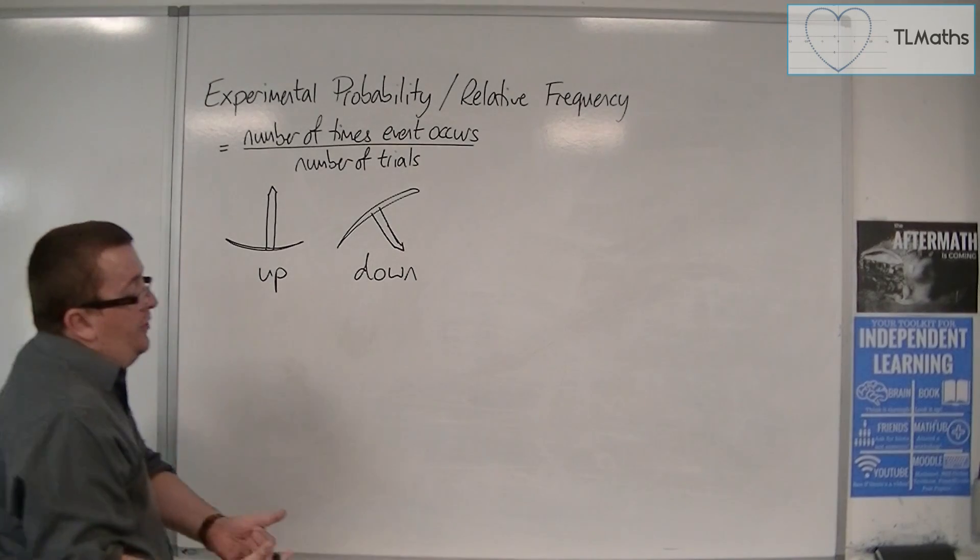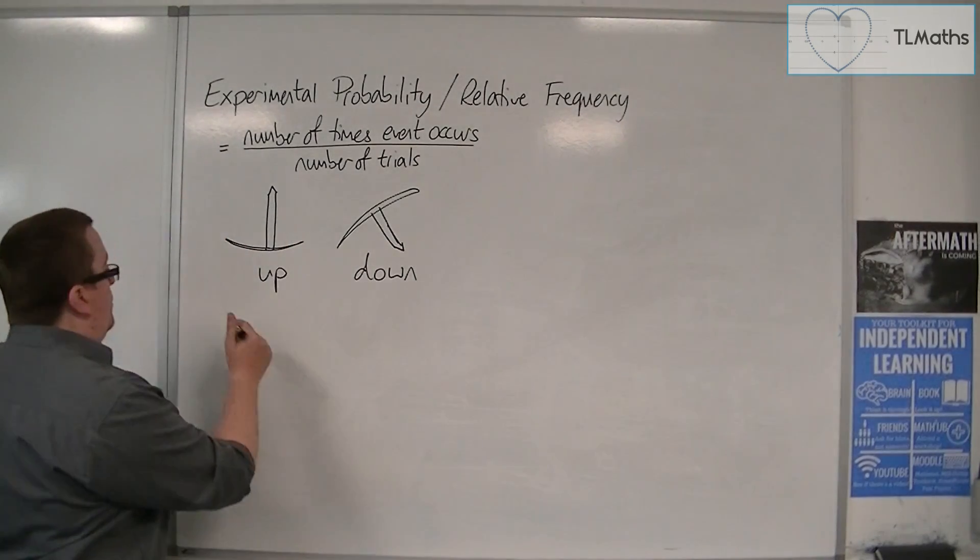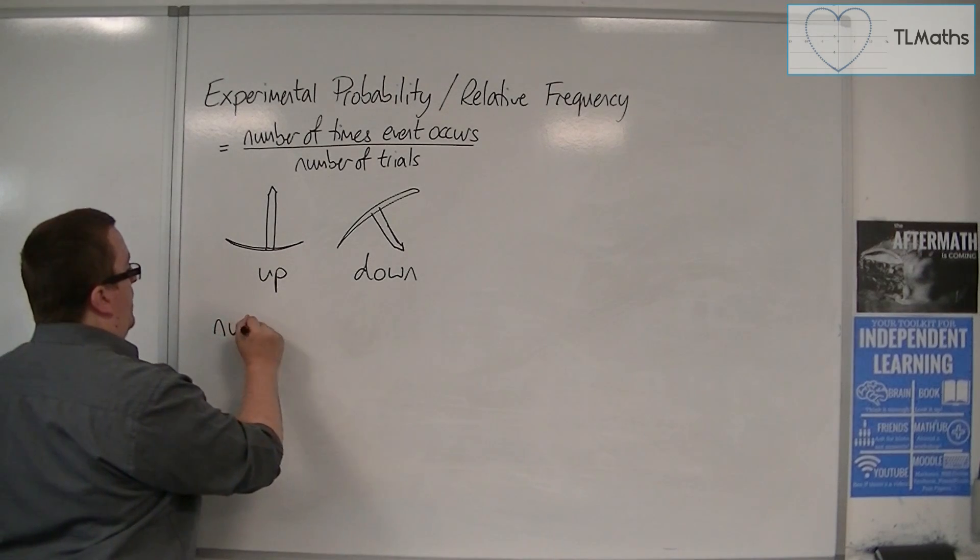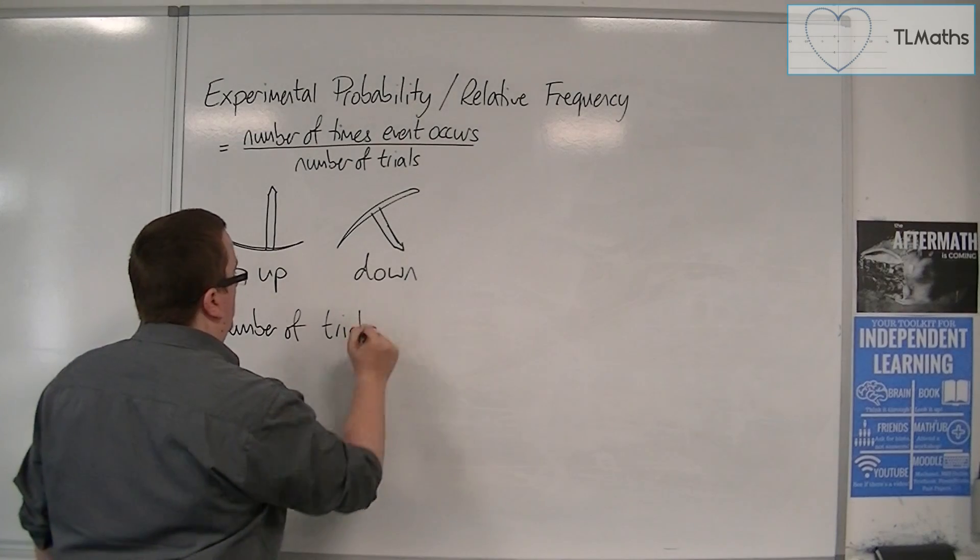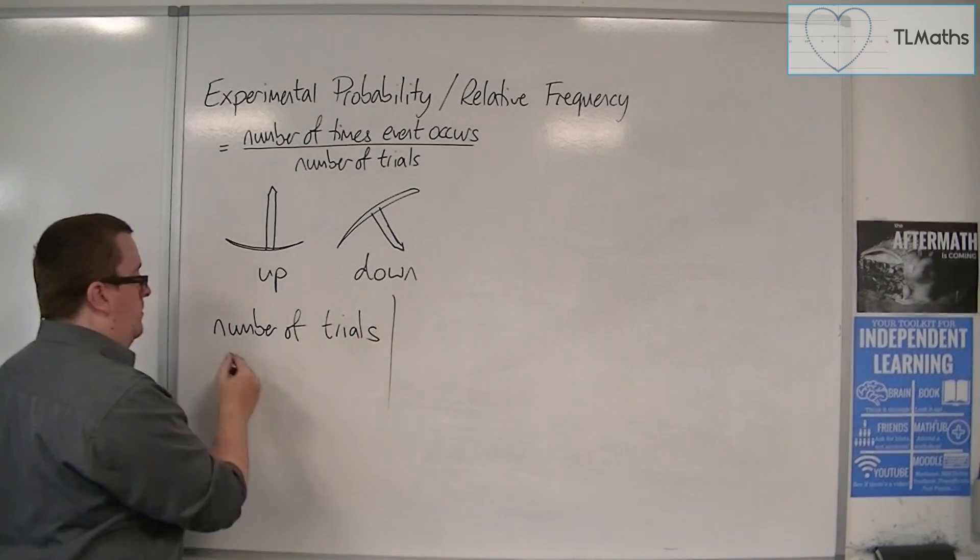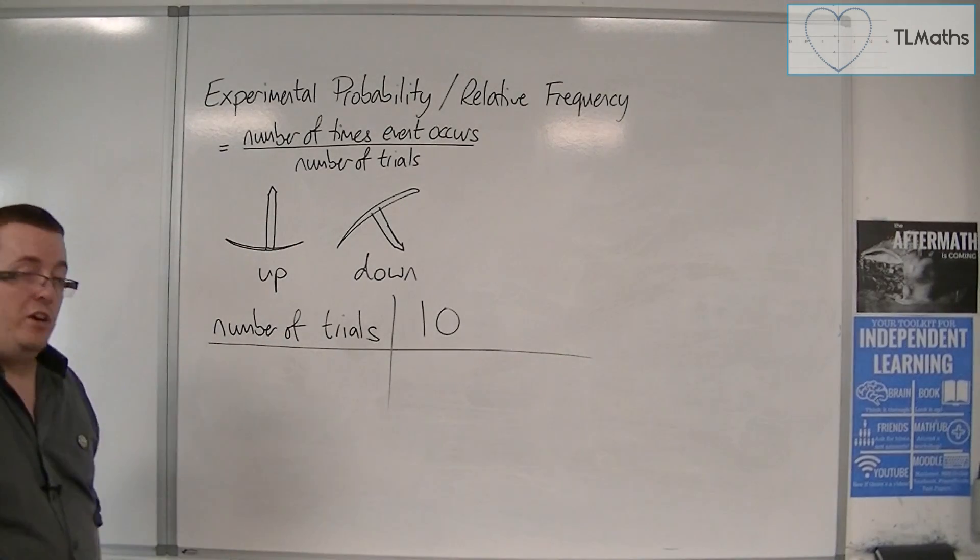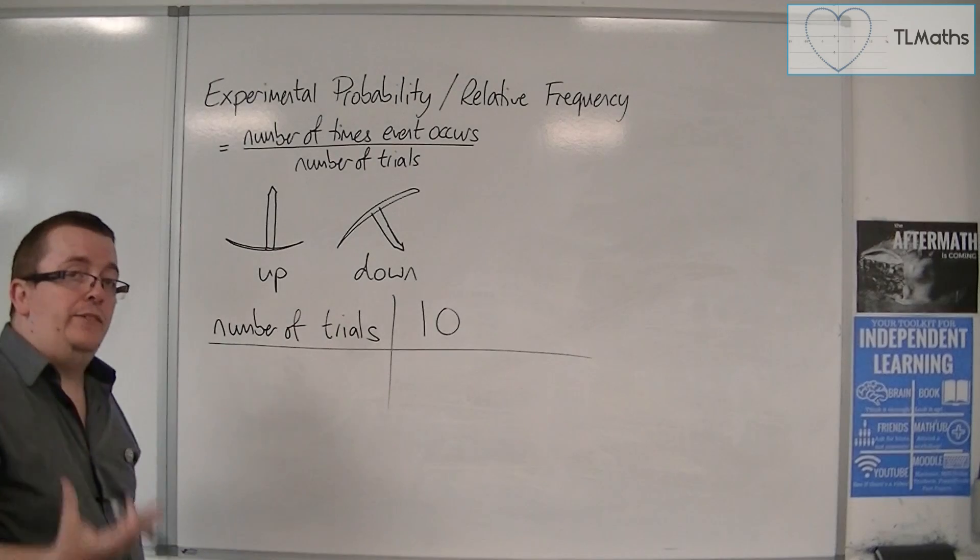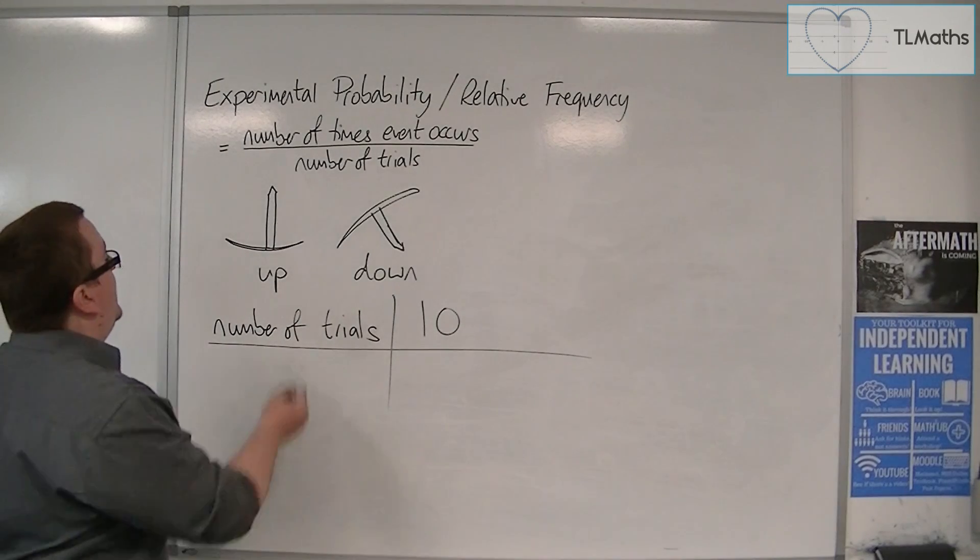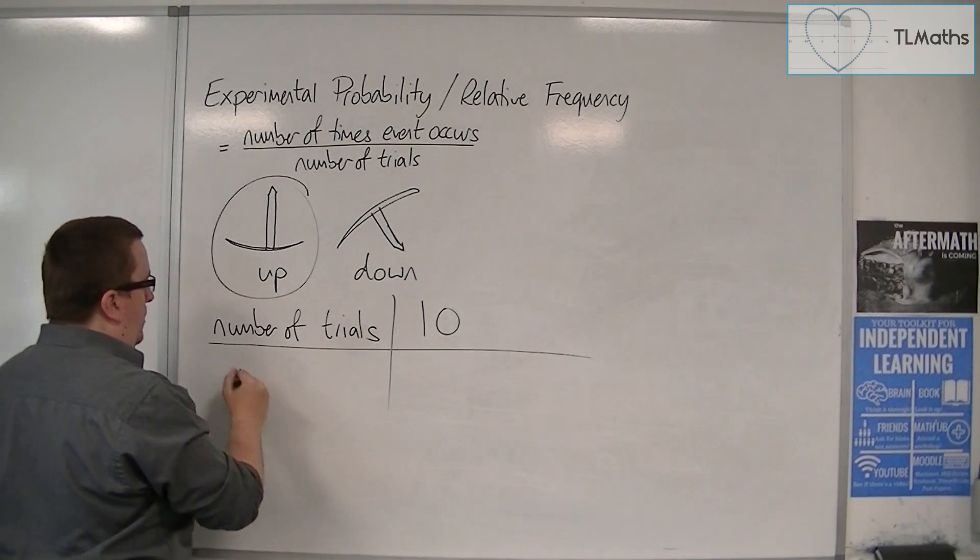So what we could do is we could drop the pin ten times. So we could have a number of trials row. So, let's say we drop the pin ten times. And we're going to count how many times it lands point up. So, we're going to count that as a success.